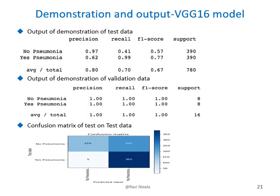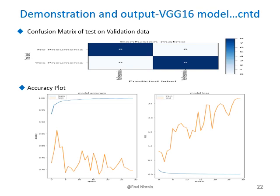This slide shows the VGG16 demonstration output. The precision of test data is 0.80 and validation is 1. The confusion matrix shows true positive cases of 385, true negative cases of 159, false positive cases of 231, and false negative cases of 5. The accuracy plot reflects those precision values. The validation confusion matrix shows true positive cases of 8 and true negative cases of 8.